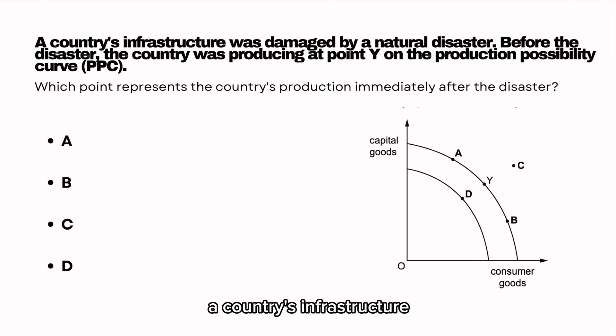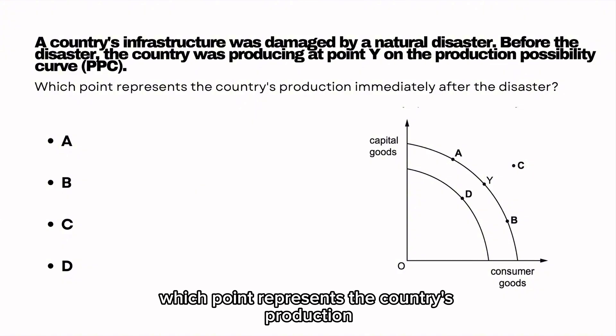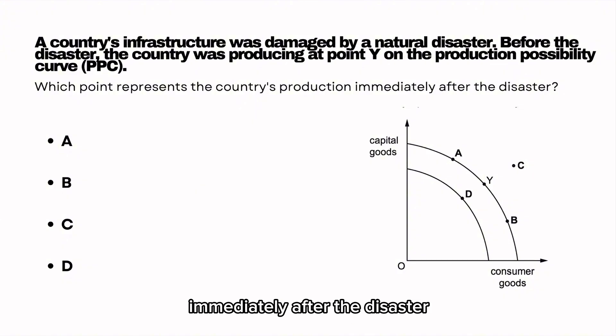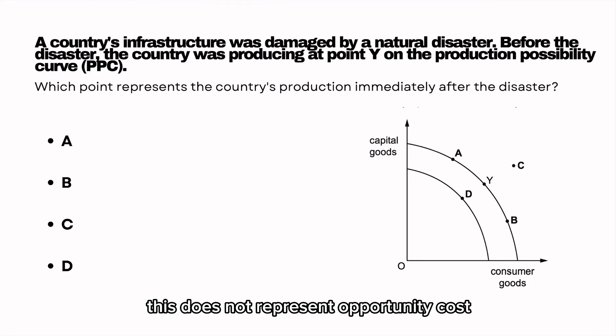A country's infrastructure was damaged by a natural disaster. Before the disaster the country was producing at point Y on the production possibility curve. Which point represents the country's production immediately after the disaster? The disaster represents a loss in potential output of an economy. This does not represent opportunity cost, so it's not A or B, so it must be D.